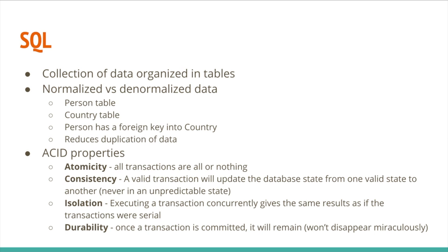The next thing is consistency. What that means is that every valid transaction will update the database state from one valid state to another — it will never be in an unpredictable state. The behavior in SQL is very consistent. The third property is isolation. Executing transactions concurrently gives you the same results as if the transactions were executed serially. Each transaction is isolated — you can think of it as SQL giving you a consistent snapshot every time you make a query.